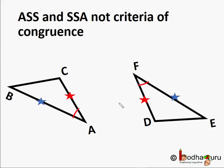Note SAS means two triangles are congruent if two sides and the included angle of one triangle are equal to the two sides and the included angle of the other triangle. That is why A, the included angle, is between two S.